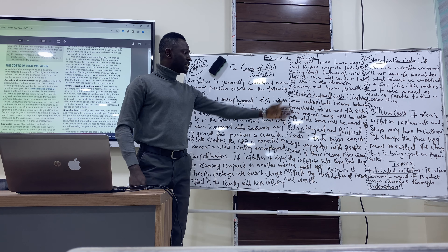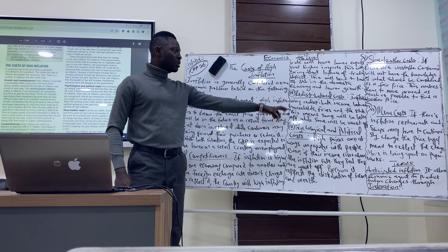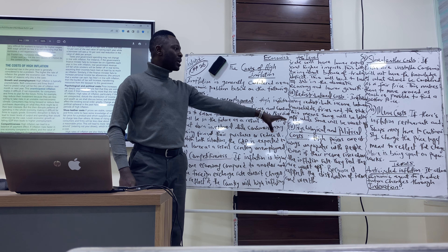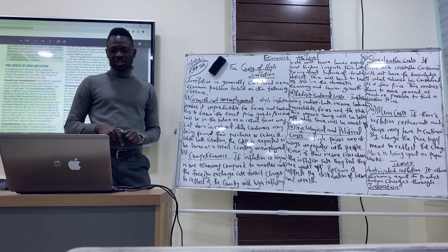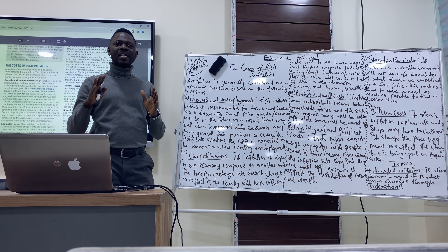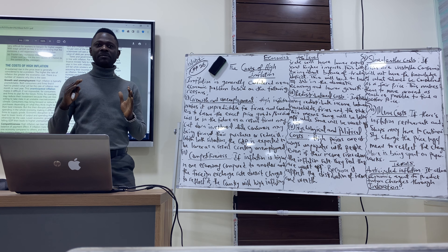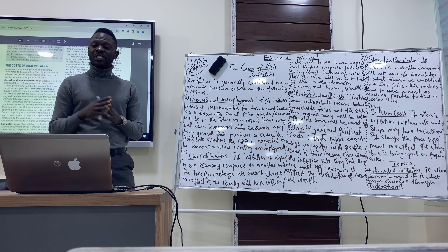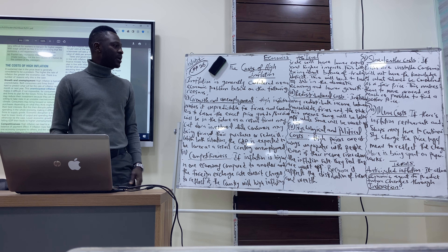The third cost is the redistributional cost. Inflation will redistribute income between households, firms, and the state — meaning some will be better off while some will be worse off. With high inflation rates, those with high income might be able to adjust. But if you are unable to negotiate for higher income, you might be worse off and unable to spend as you used to spend.